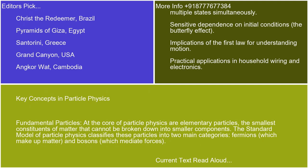Key concepts in particle physics: at the core of particle physics are elementary particles — the smallest constituents of matter that cannot be broken down into smaller components. The standard model of particle physics classifies these particles into two main categories: fermions, which make up matter, and bosons, which mediate forces.